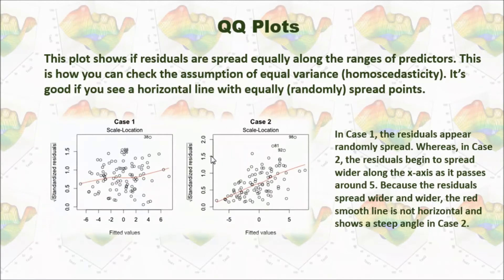This plot shows if residuals are spread equally along the range of predictors. Let's check out the following two cases. In case one, you can see the residual appear randomly spread. If you draw a line through those residuals, it shows roughly a horizontal line.